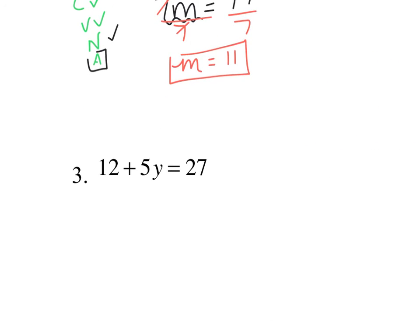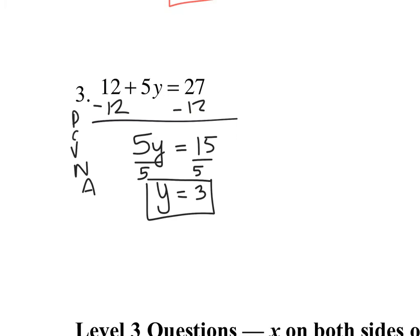Now for 12 plus 5y equals 27, try to do this one by yourself. You should subtract your 12 first. When you subtract your 12, your 12s cancel, and you get 27 minus 12. 27 minus 12 is 15. I now have 5y that I'm multiplying, so I need to get rid of my multiplication by dividing. I divide both sides by 5. My 5s cancel, so I get y equals 3. That's your final answer.